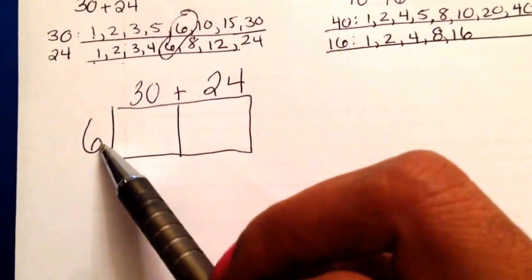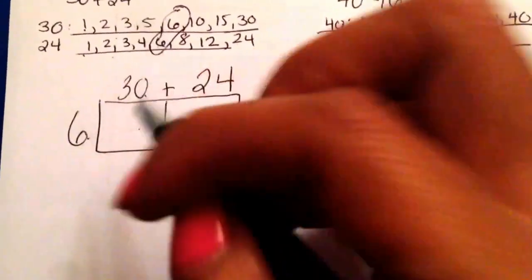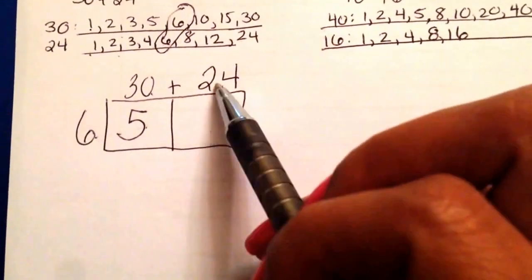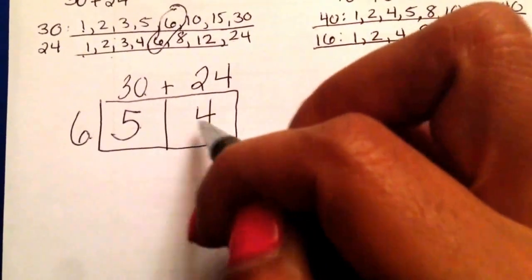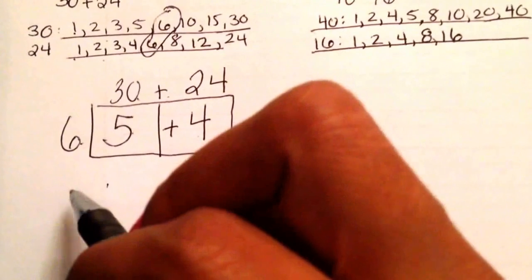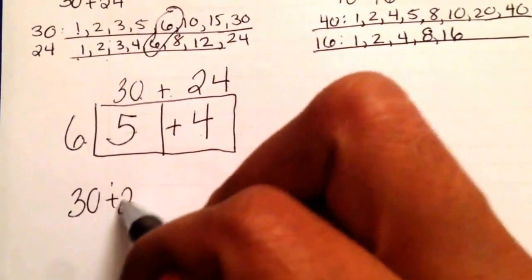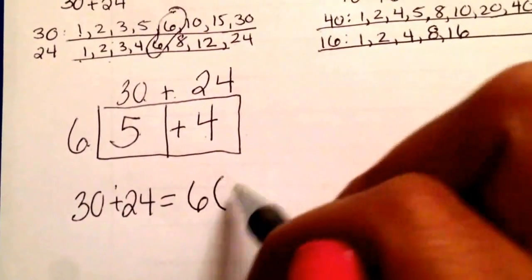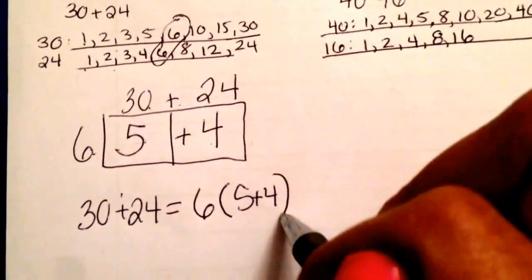Now I have to ask myself, how many 6s make 30? 5 6s. How many 6s make 24? 4. And because this is a plus sign, I put a plus there. So my equivalent expression, 30 plus 24, can also be written as 6 times 5 plus 4.